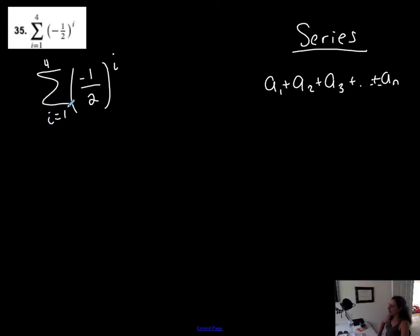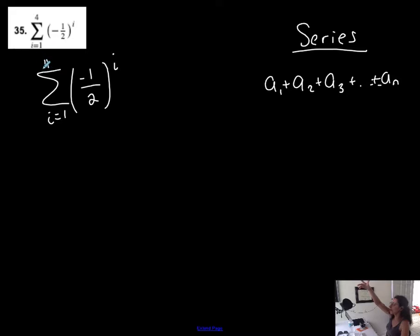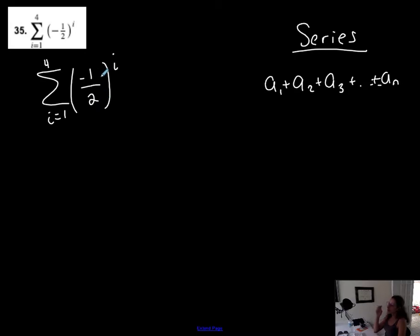Start at this value and continue to increase from this value — in this case 1 — all the way up until 4. Integers only, no decimals. So the first term is 1, then 2, then 3, and I stop at 4. This tells me where to end, this tells me where to start, and the terms in the middle are integers increasing by 1.